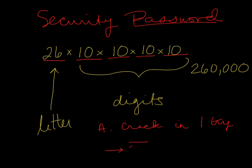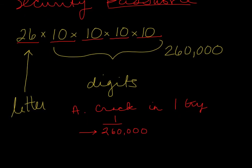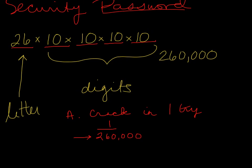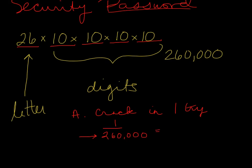That 260,000 is the denominator of my fraction. Only one of those is the correct password, so there's only one way to crack it in one try. So the probability is one divided by 260,000. Now, this is interesting — I suggest you do that in your calculator. When I do one divided by 260,000, I get 3.846153... and students have just written that down. A couple things are wrong: you know 1 divided by 260,000 is a tiny, tiny little number — it's not going to give you 3.